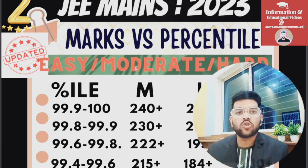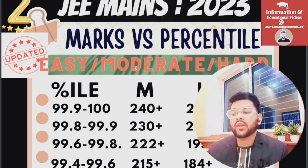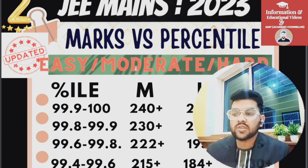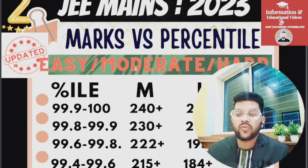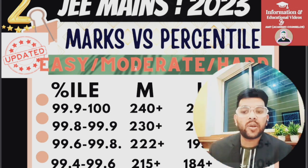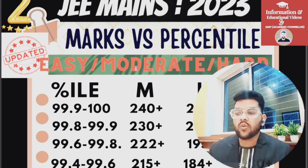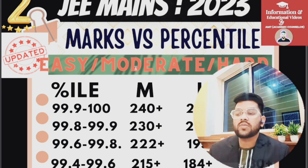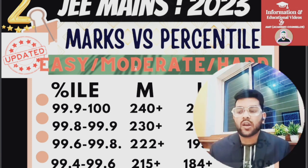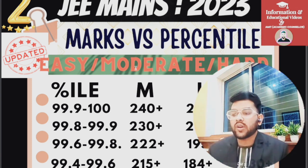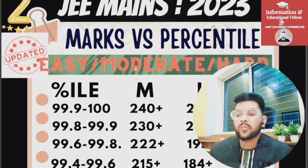For 99.8 plus percentile: moderate 230 plus, hard 205 plus, easy 250 plus marks required. For 99.6 percentile: moderate 222 plus, hard 195 plus, easy 235 plus. For 99.4 percentile: moderate 215, hard 184, easy 230 marks required.